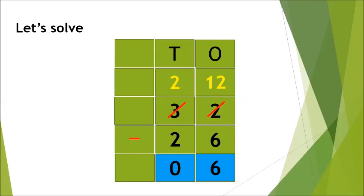Here is a question from worksheet number 3B for your practice. This is part A. In the top boxes you will write the place values — tens and ones. After writing the place value, solve the sum. The question is 32 minus 26. Now start from the column of ones: 2 minus 6. Here we have a smaller number on the top and bigger number 6 on the floor. Can we minus 6 from 2? No. So what should we do? We should go to the next door and get 10 more. Take one 10 from 3 tens and give it to 2 ones. Now 3 will become 2 and 2 will become 12.